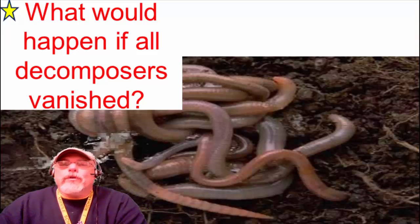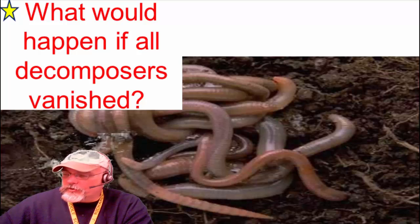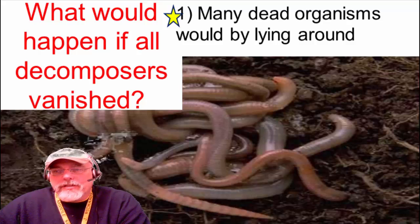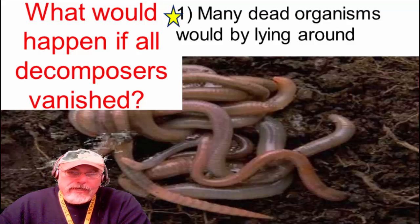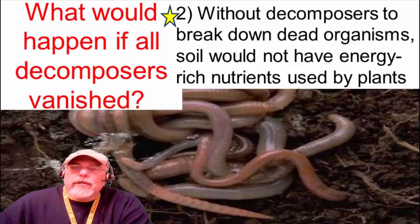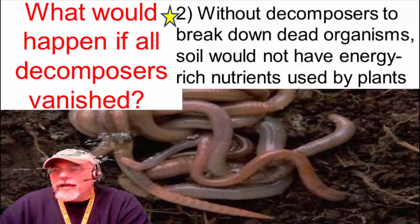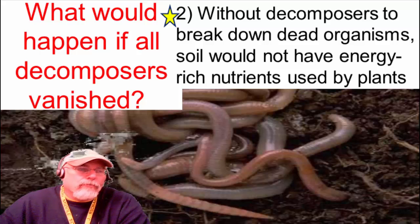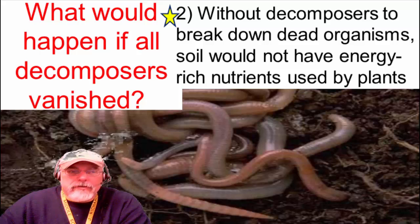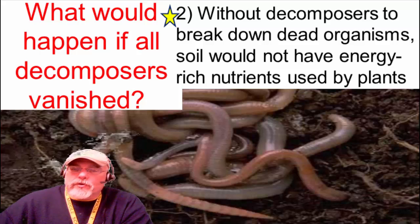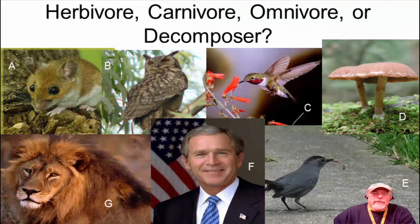Here's a good question: what would happen if all decomposers were to vanish? First of all, many dead organisms would be lying around — we need decomposers to break down dead organic material. Without them, soil would not have energy-rich nutrients that can be used for plants, so the soil would be depleted fairly quickly without a constant renewal of nutritional soil. Take a look at these and see if you can identify which is which: herbivore, carnivore, omnivore, or decomposer. Pause here if you want — the answers are coming up.